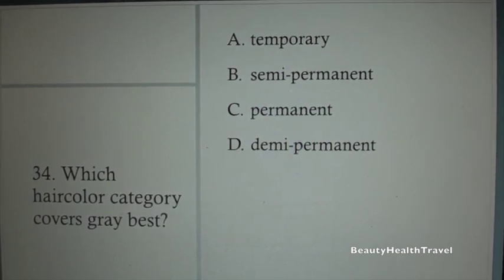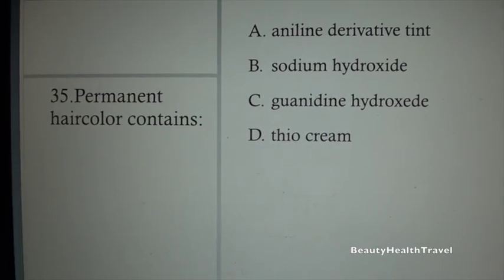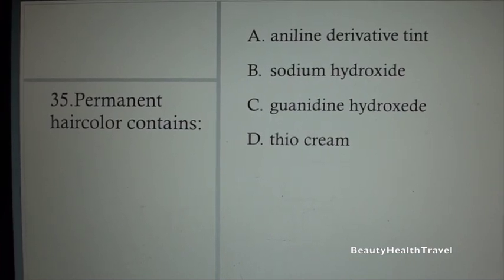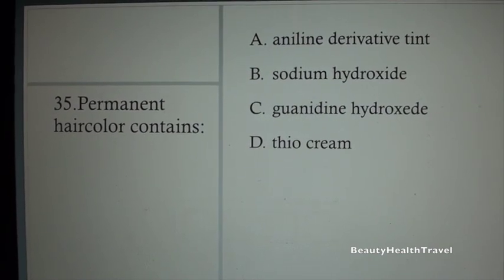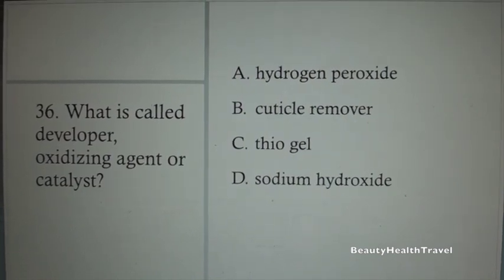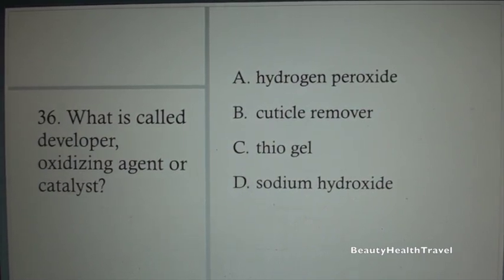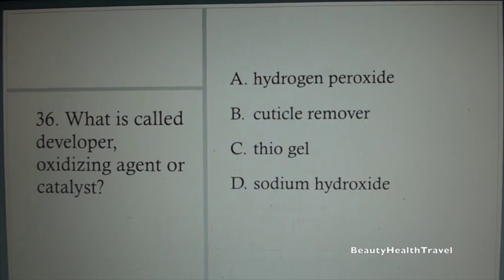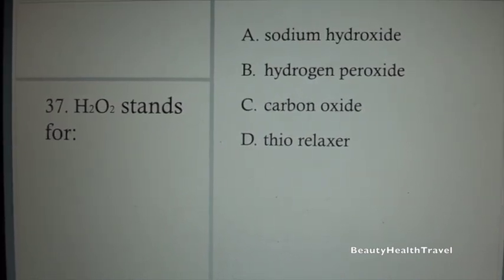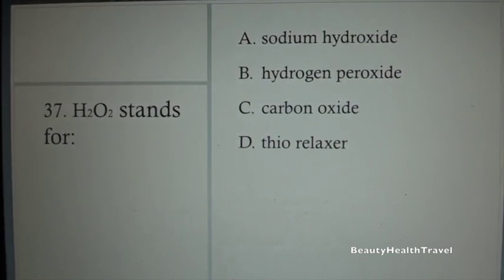Question 32: Which test is required 24 to 28 hours before the color application? A. Peroxide test, B. PD test, C. Elasticity test, D. Relaxer test. Question 33: Permanent hair color penetrates the hair: A. Cuticle layer, B. Cortex layer, C. Medulla layer, D. None of the above.